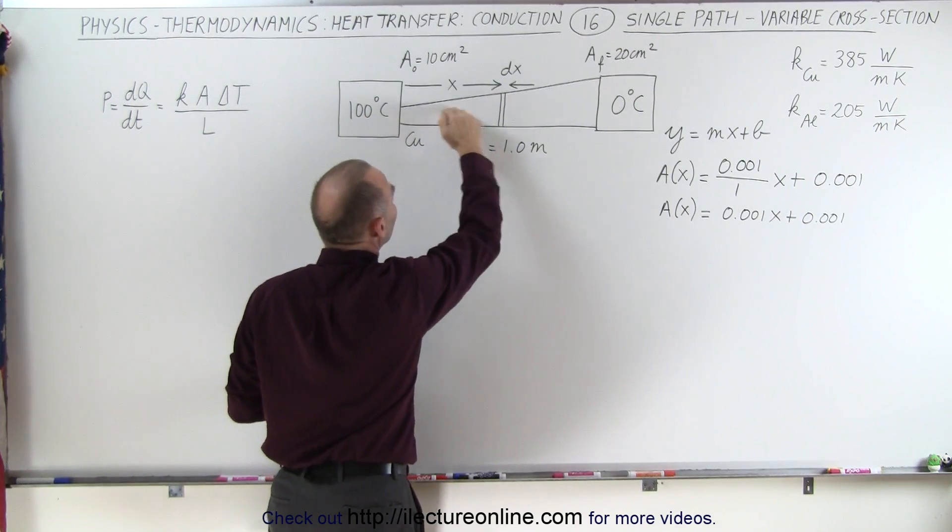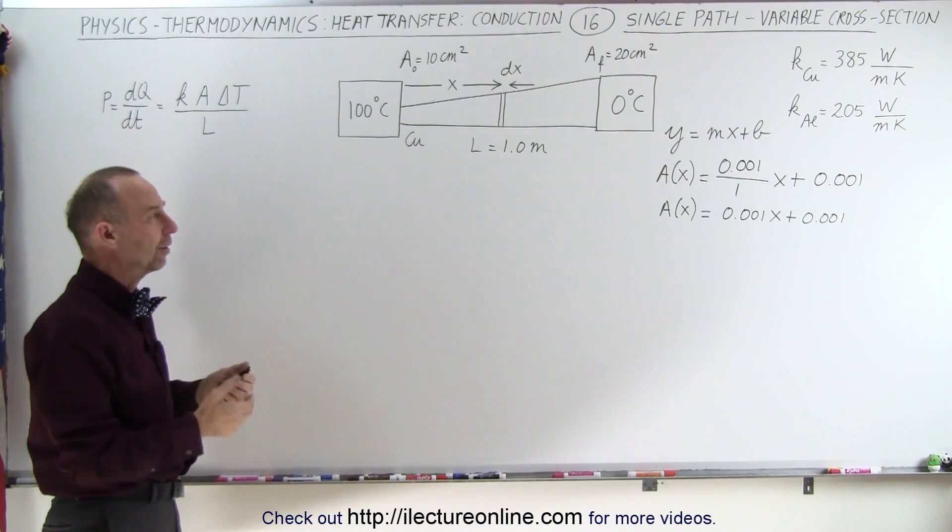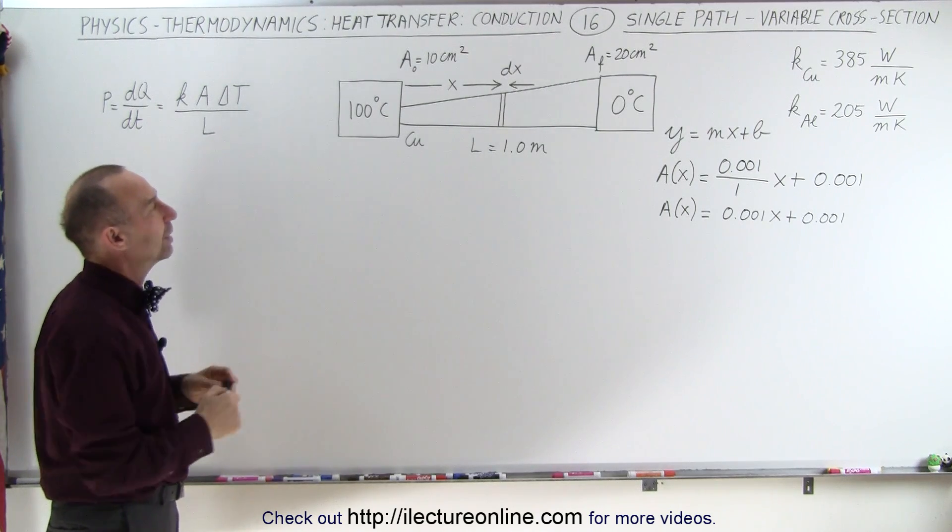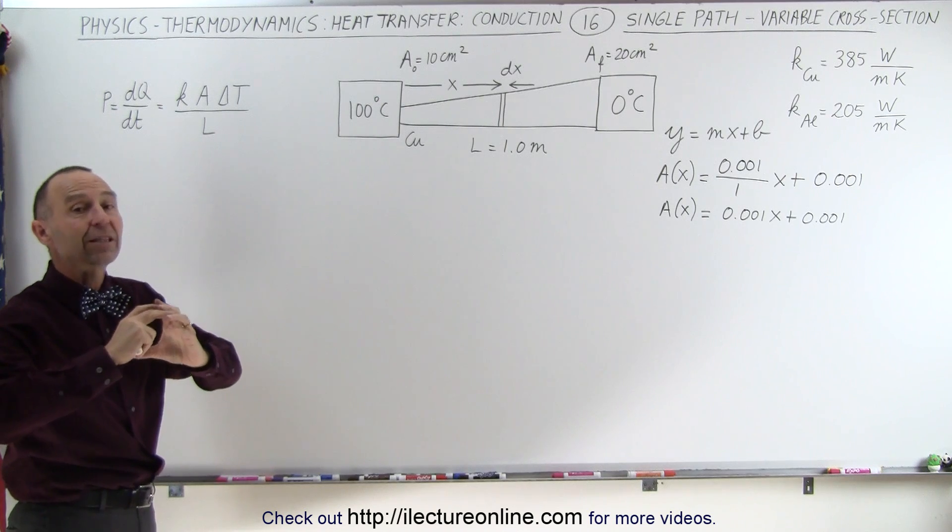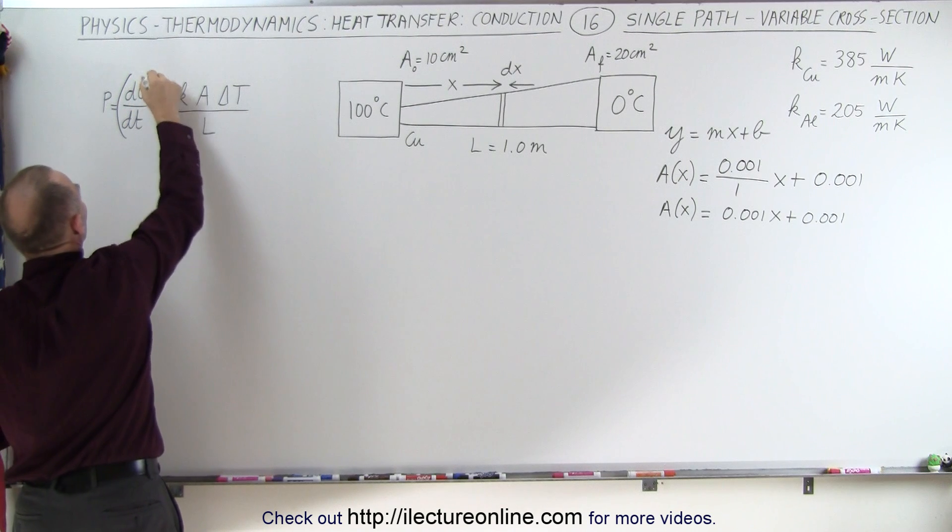You cannot have more heat flow in one end and less in the other end because that wouldn't work. Just like you can't have more or less water flowing through a hose at any point in the hose, regardless of the diameter or cross-sectional area of the hose. So we realize that this is going to be a constant.